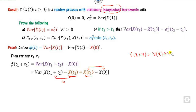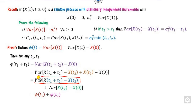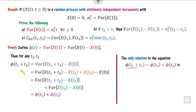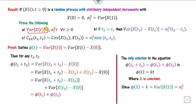From the functional equation φ(t₁ + t₂) = φ(t₁) + φ(t₂), the only solution is φ(t) = k·t, where k is a constant. To find k, evaluate at t = 1: φ(1) = Var(X(1)) = σ₁². Therefore k = σ₁², and φ(t) = σ₁²·t. This gives Var(X(t)) = σ₁²·t, which is the required result for the first part.